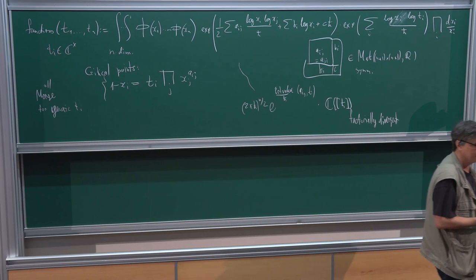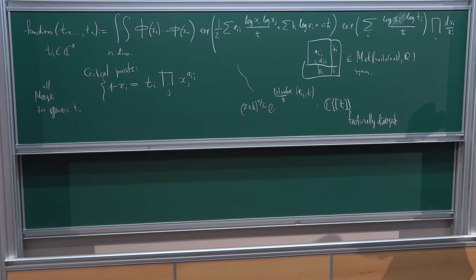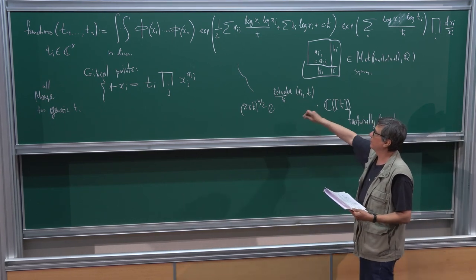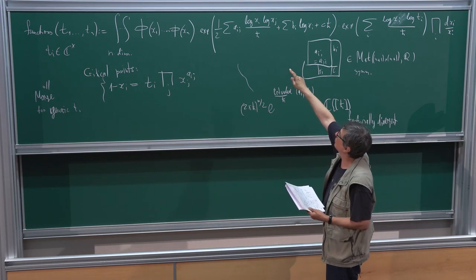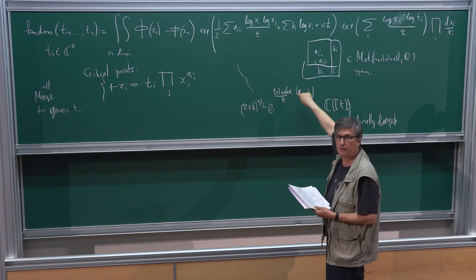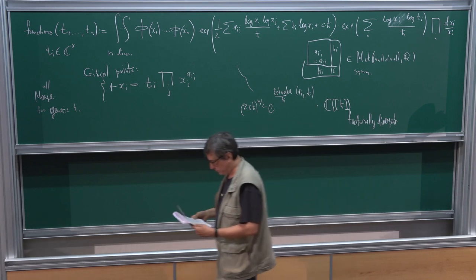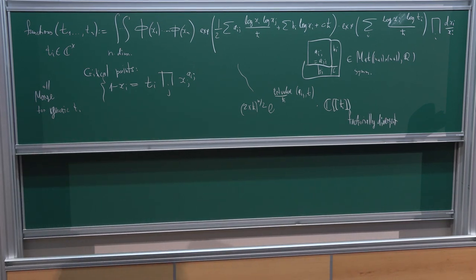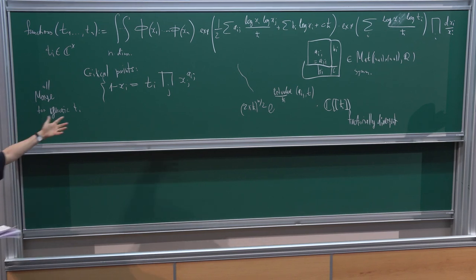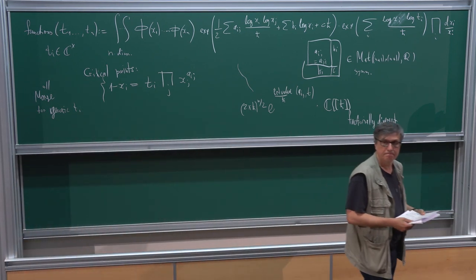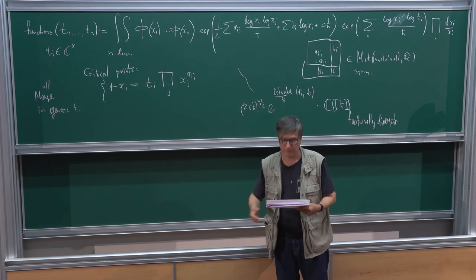Nothing more goes on. Three-dimensional manifolds — I forgot what they are. This is the critical value. It depends only on the rational matrix A_{ij} and the variable t. There are only finitely many solutions for generic t, so you get finitely many series. It's the number of solutions of this algebraic equation for generic t. The asymptotic expansion of this integral at critical points will have more singularities.